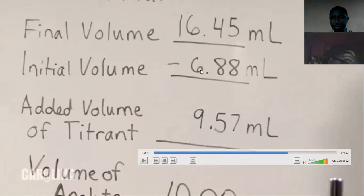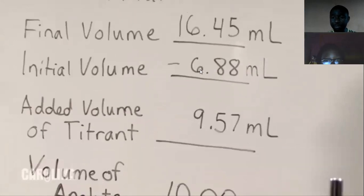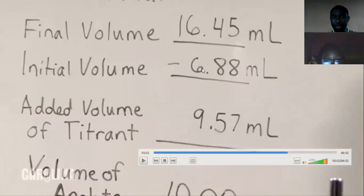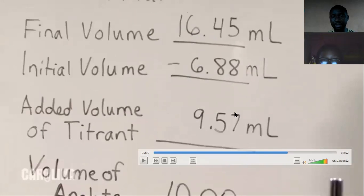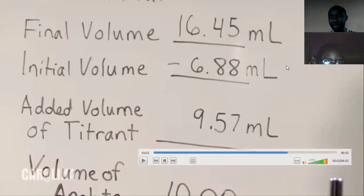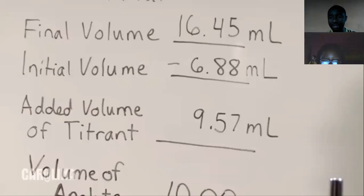The first titration is an estimate — open up the stopcock and allow the titrant to enter the flask quickly while continuously swirling. As the volume of titrant increases, the color of the indicator appears then disappears as you swirl. When the analyte becomes a colored solution, close the stopcock and record the final volume. Subtract the initial volume from the final volume to get the estimated volume of titrant needed. This becomes your rough reading; do it two more times, then take the average of the three values divided by three.